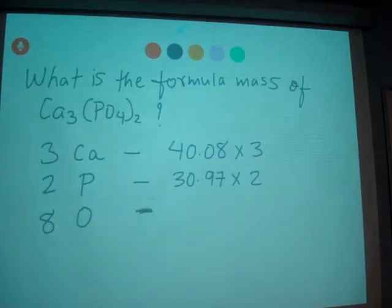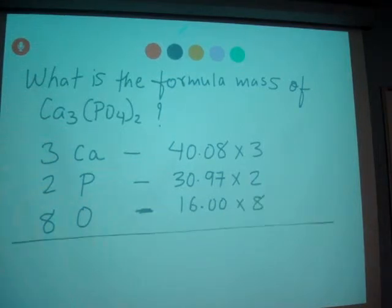We have 16 atomic mass of oxygen times 8. And we multiply and then we add them together, all of them.